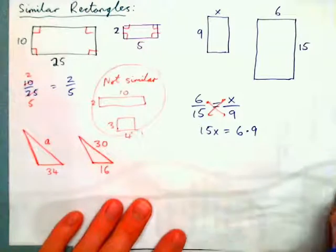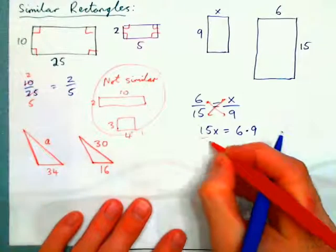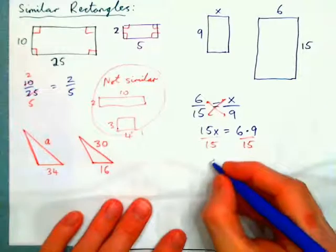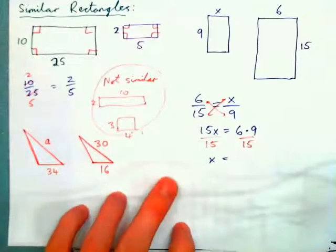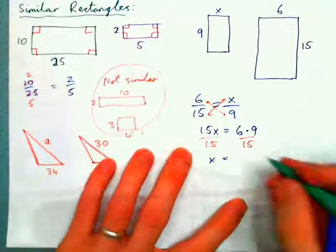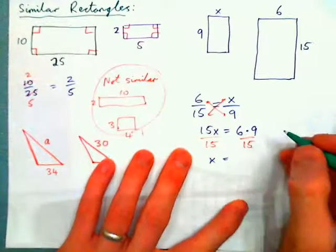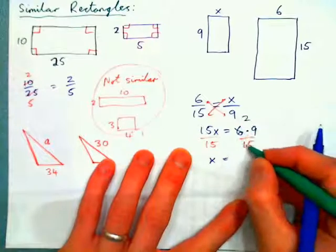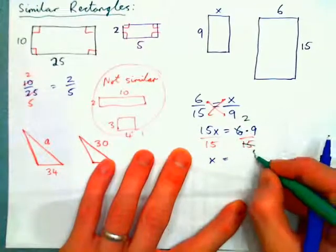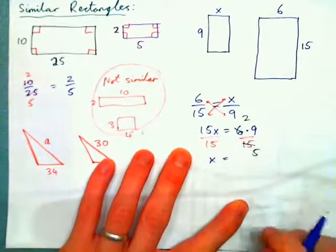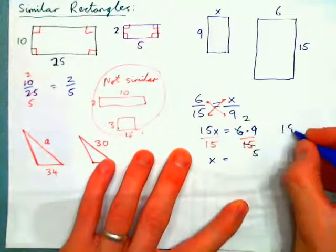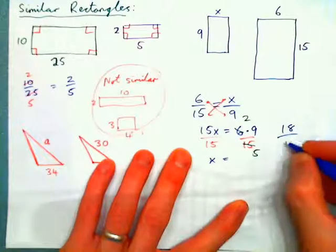Solve for x by dividing both sides by 15. We have x equals — simplify by dividing by 3: 3 into 6 goes twice, 3 into 15 goes 5 times — so 2 times 9 is 18 over 5.